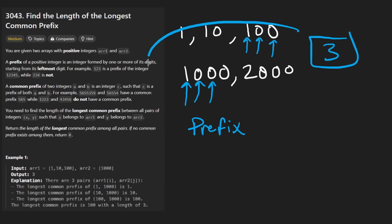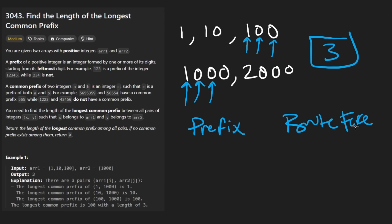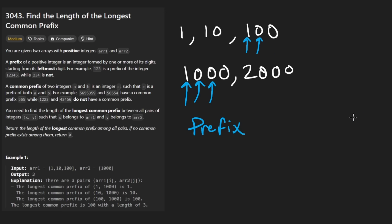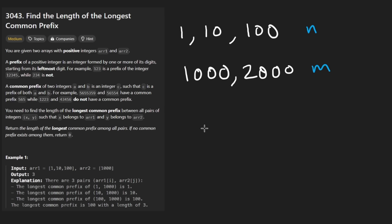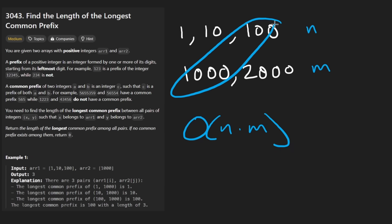That's the brute force approach. What's the time complexity? Understanding it can help us figure out where the bottleneck is. If array one is of length n and array two is of length m, the nested loops give us n times m comparisons.